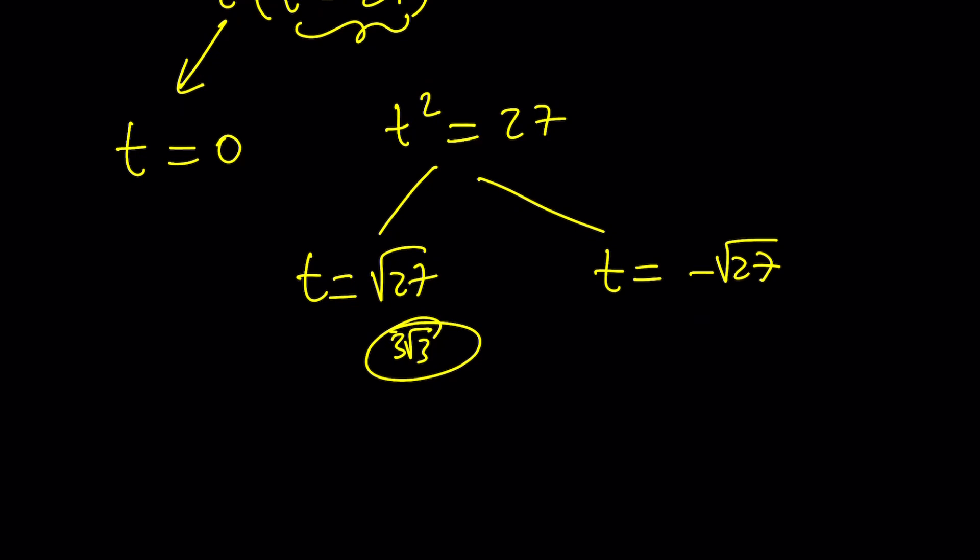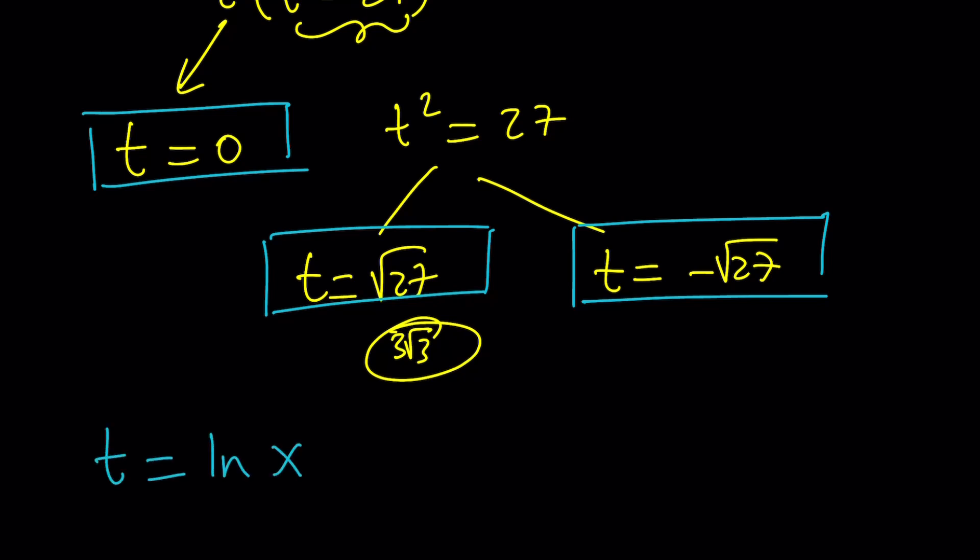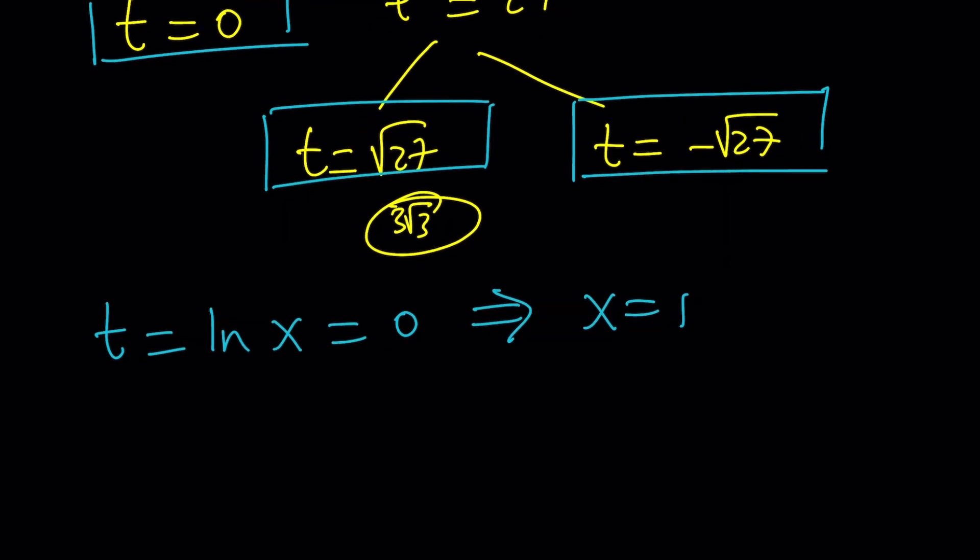But these are not x values. These are t values. So you must back substitute. How do you back substitute? Using the formula. What is t? t is ln x. Since t is 0, this gives us ln x equals 0, which implies x equals 1. Because log 1 is always 0, any base, right? Or you can just use the definition e to the power 0 equals x. And that gives us x equals 1 again. So we got one of the solutions. What about the other ones?